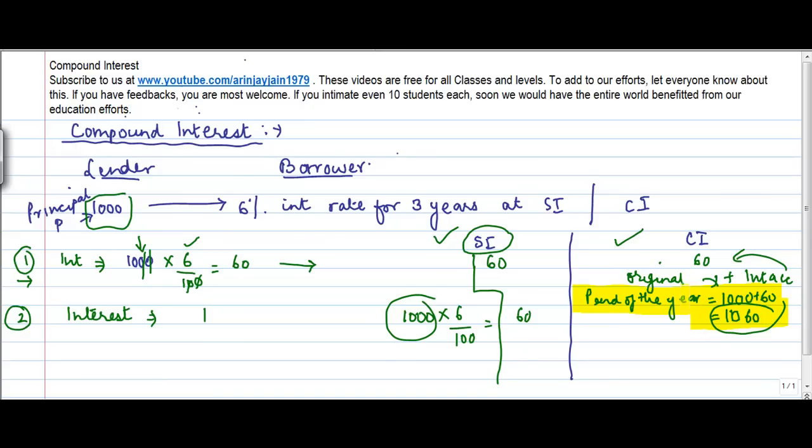So every year what I do is to compute my principle. I take the opening principle, which for year two was the principal as on year one, and to that I add the interest during the year. So now when I calculate the compound interest for this second year, it will be 1060 into 6 divided by 100.